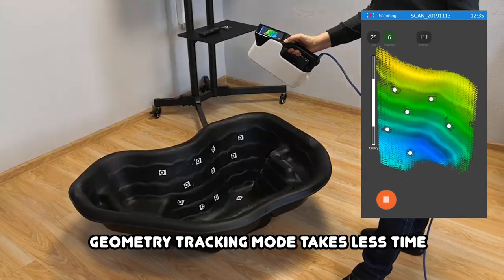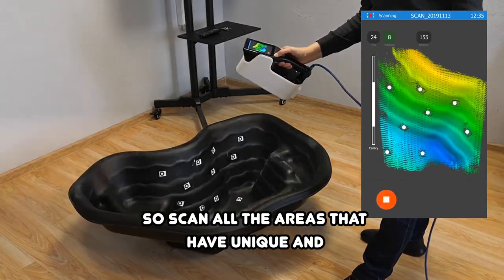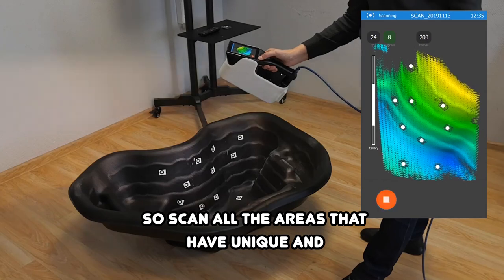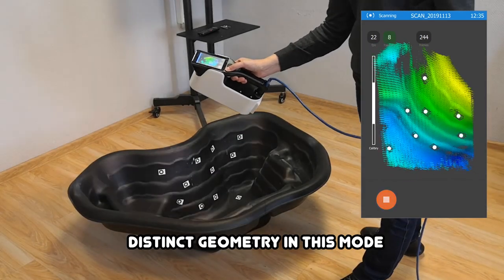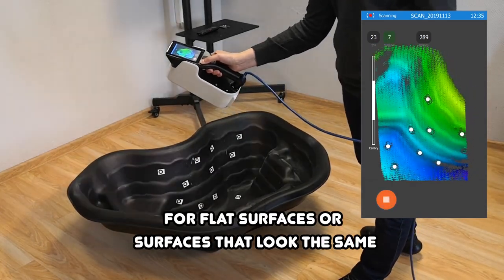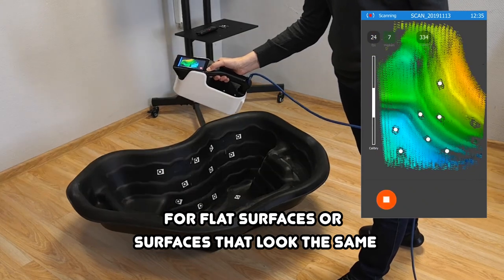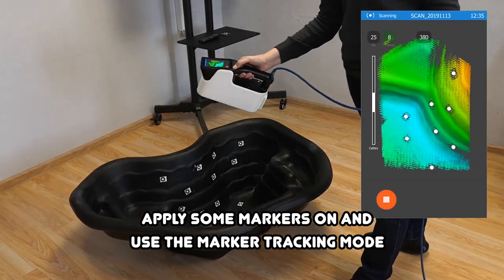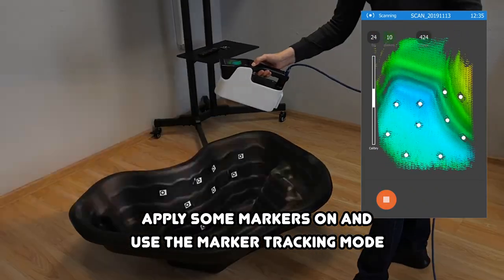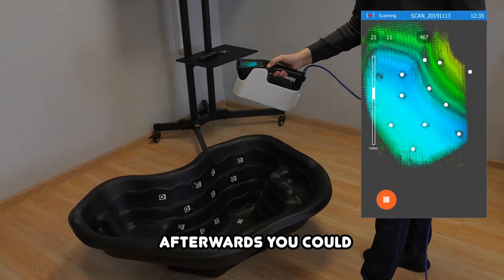Normally, scanning in geometry tracking mode takes less time. So scan all the areas with unique and distinct geometry in this mode. For flat surfaces or surfaces that look the same, apply some markers on and use the marker tracking mode. Afterwards, you could combine the point clouds of one object captured in different tracking modes.